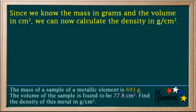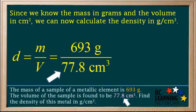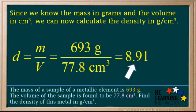Since we know the mass in grams and the volume in centimeters cubed, we can now calculate the density in grams per centimeters cubed. Write the density formula, d equals m over v. Substitute 693 grams for the mass and 77.8 centimeters cubed for the volume. 693 divided by 77.8 comes out to 8.91.